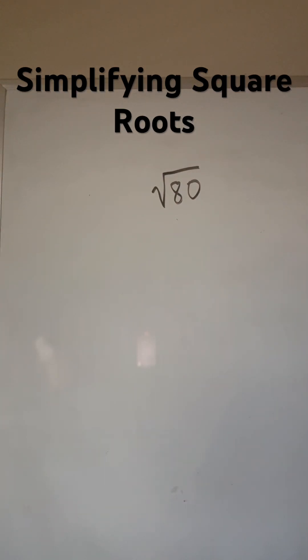Anytime you have an answer with a square root, you want to make sure you completely simplify that square root. The way you do that is by looking to see if any of your perfect squares can go into that number that's underneath the square root.